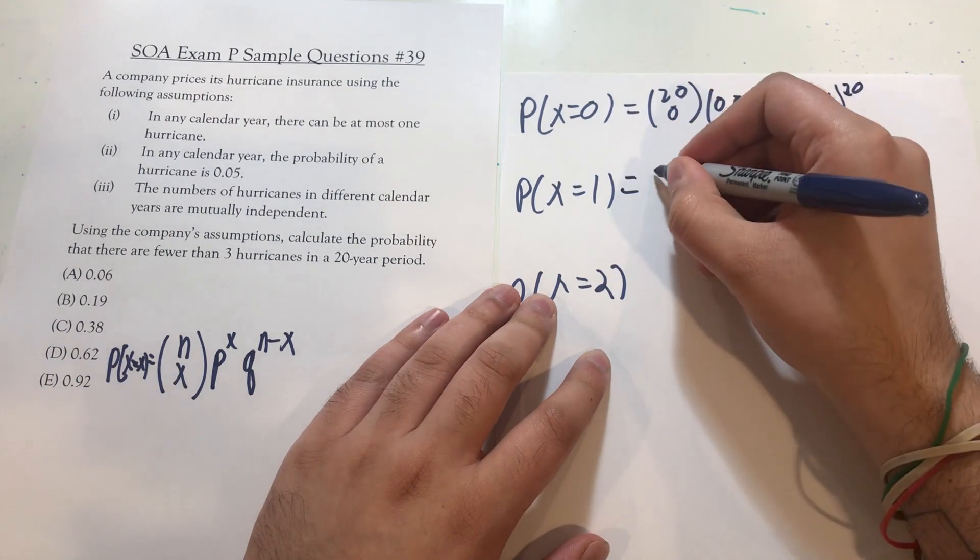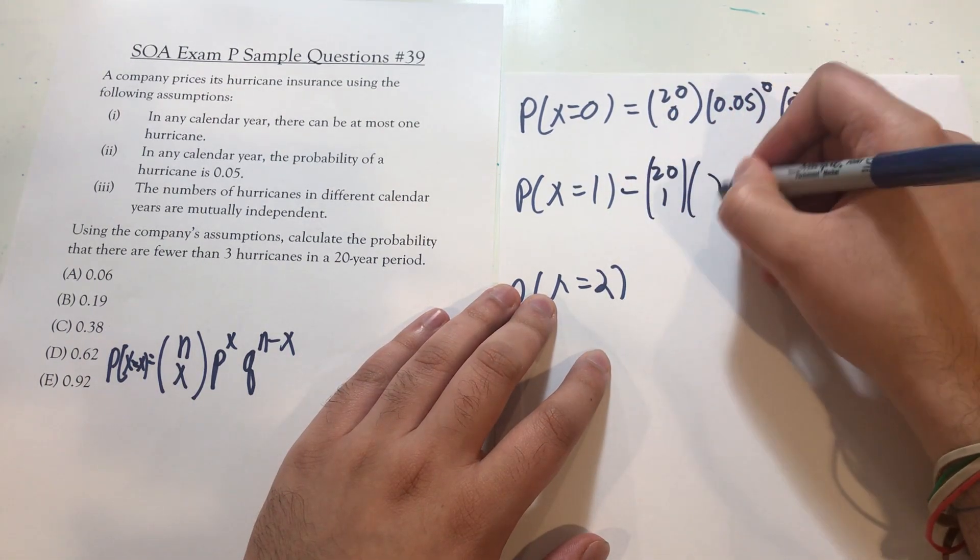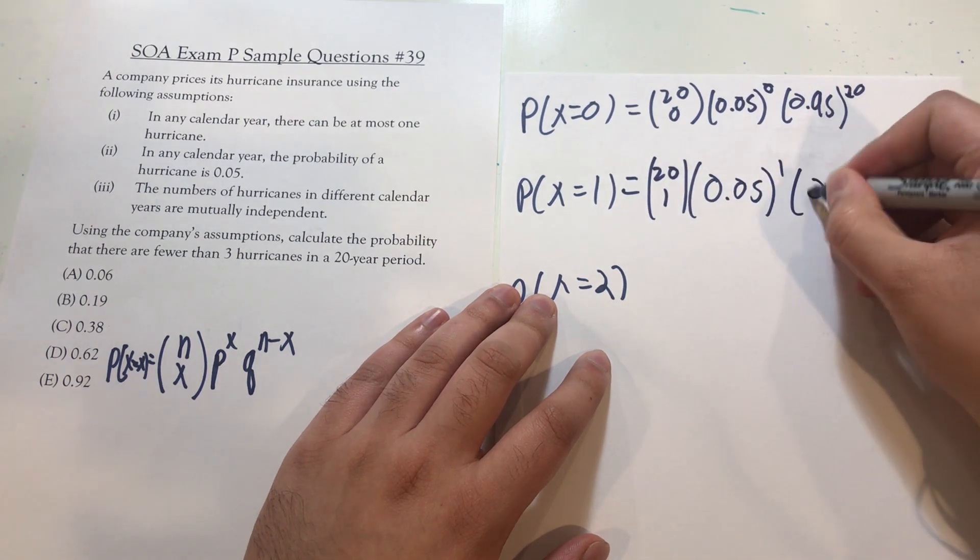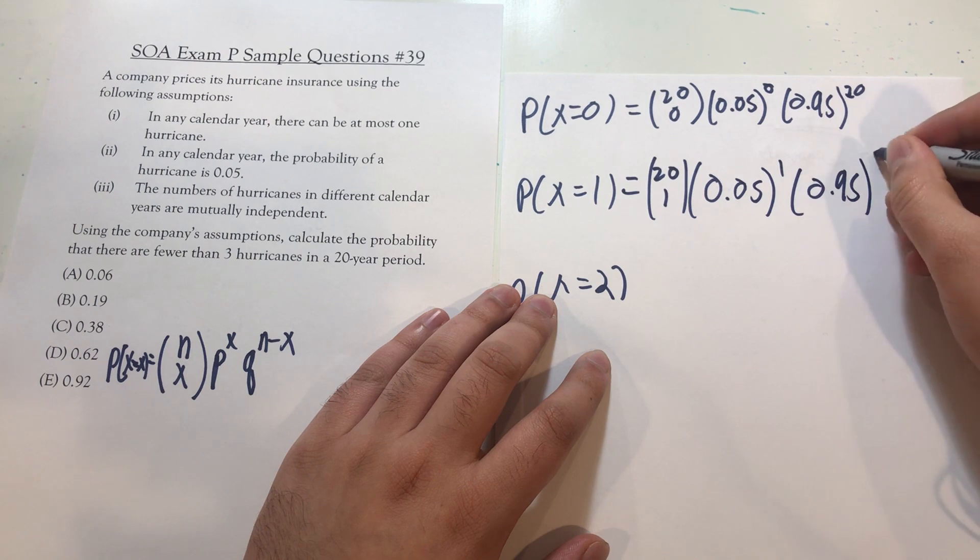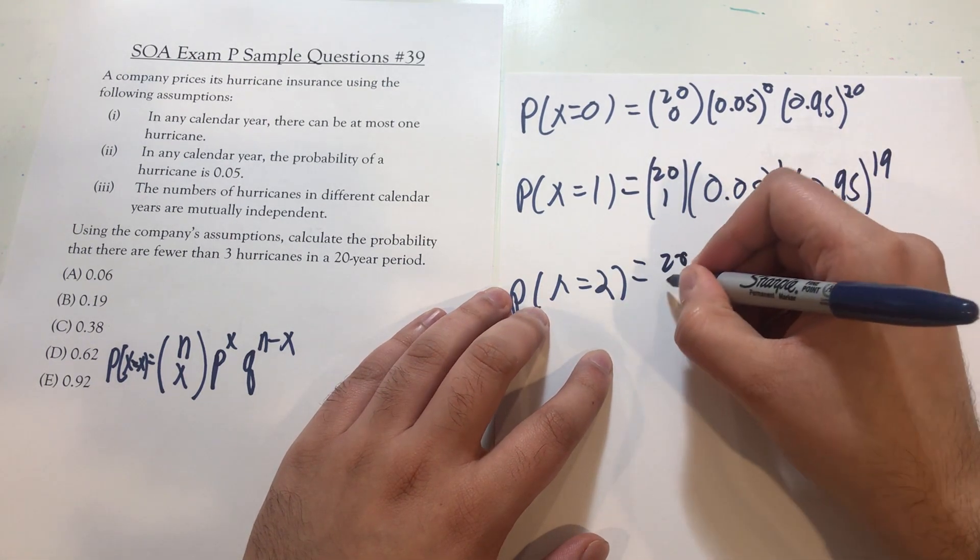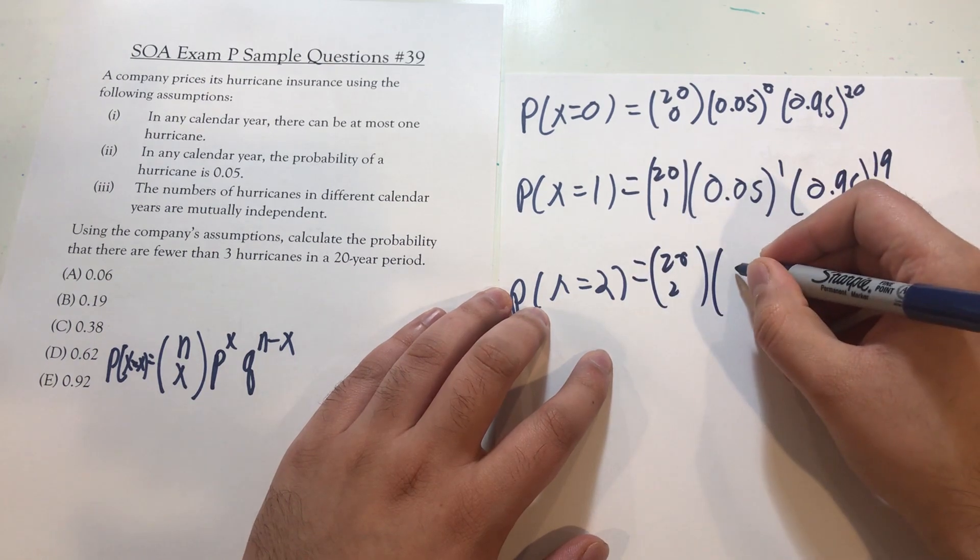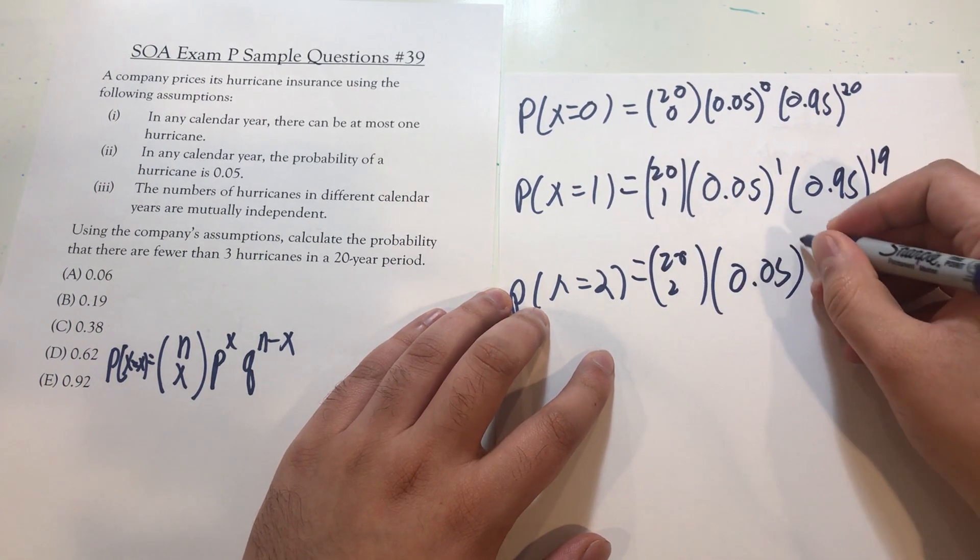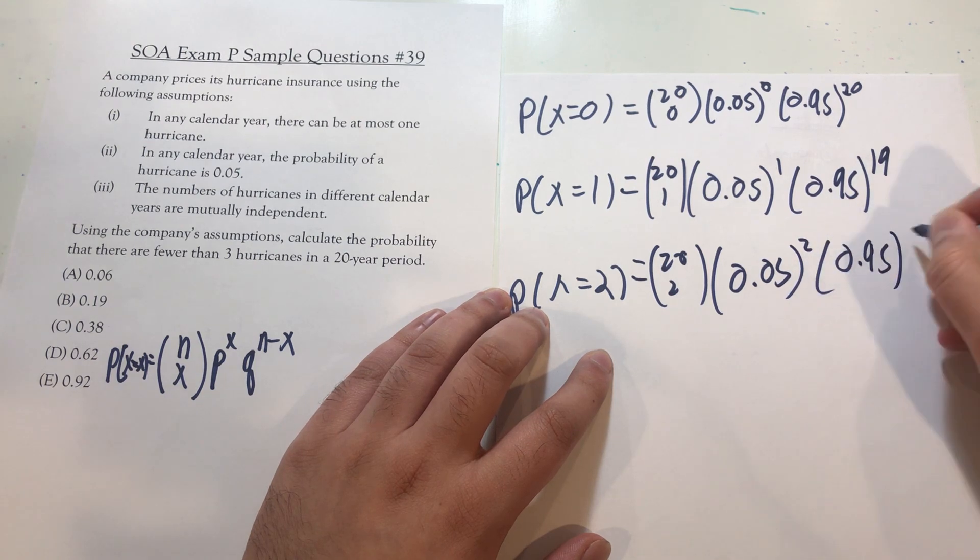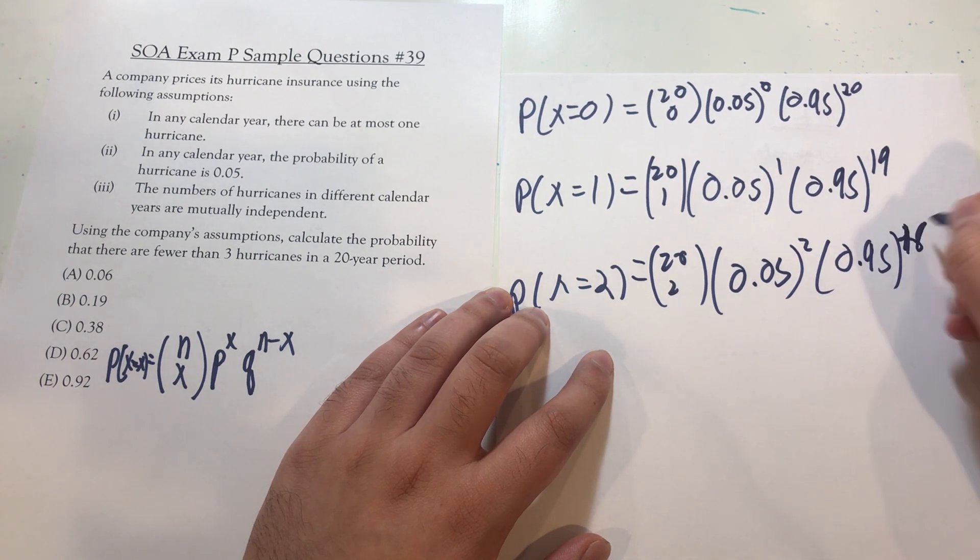This is 20 choose one times 0.05 raised to the first power times 0.95 raised to the 19th power. And 20 choose two times 0.05 squared times 0.95 to the 18th power.